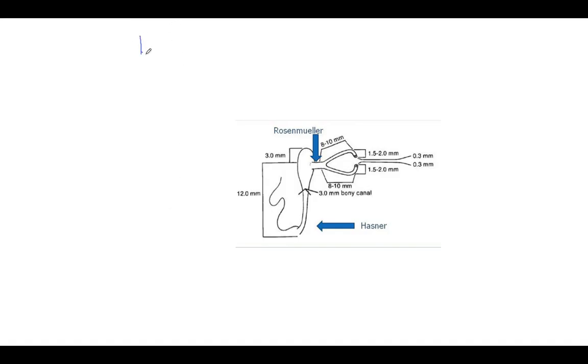We start with the lacrimal drainage system. As you can see in the figure, this is the lacrimal drainage pathway of the eye. There are two punctas on the medial side of the eyelid. From these punctas, they go upwards into the upper canaliculi.